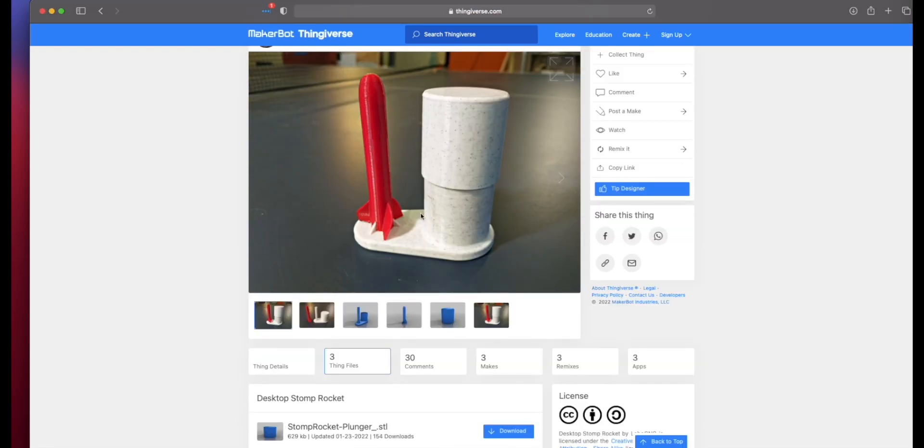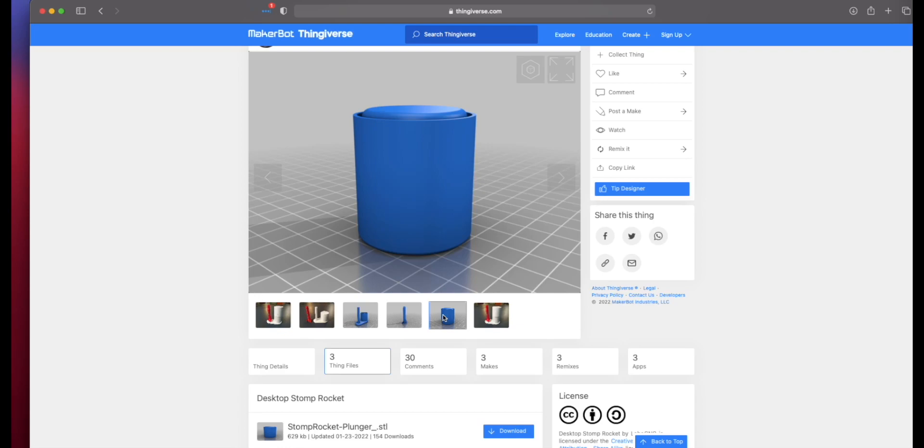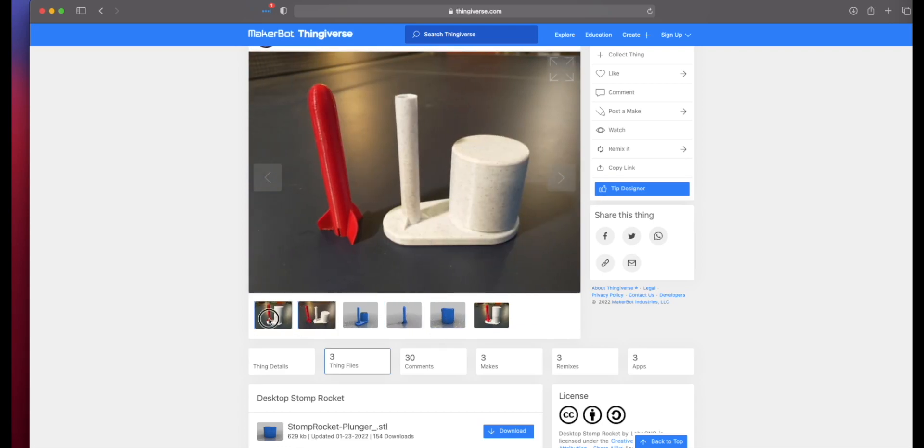I found this on Thingiverse. It consists of three parts, one with the base, you've got the plunger that goes into the base, and then you have the rocket itself. Pretty simple, pretty cool.